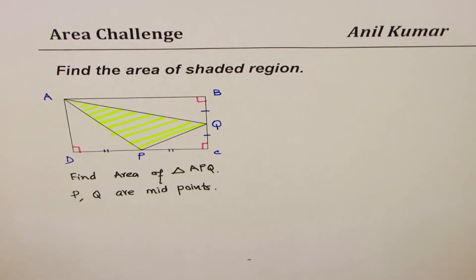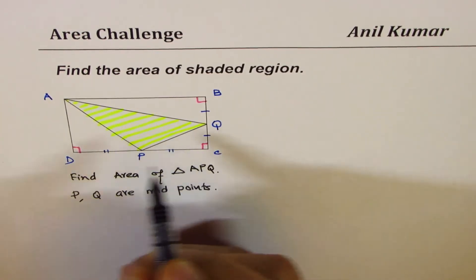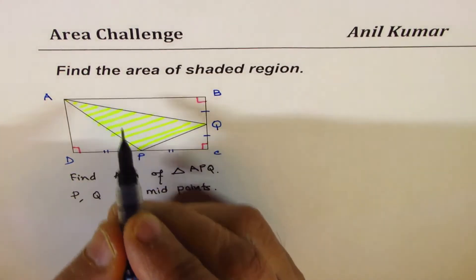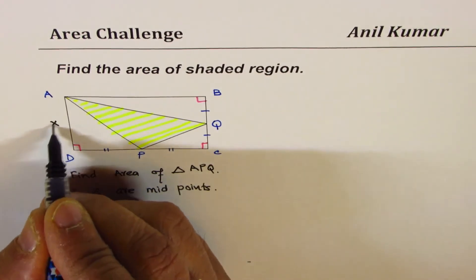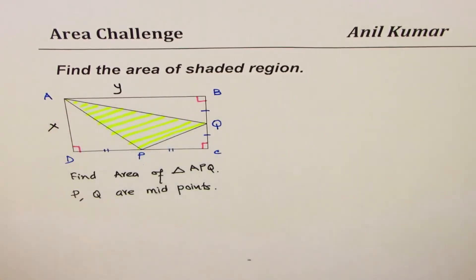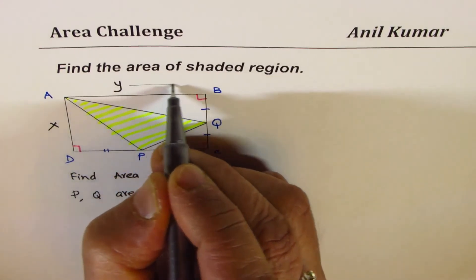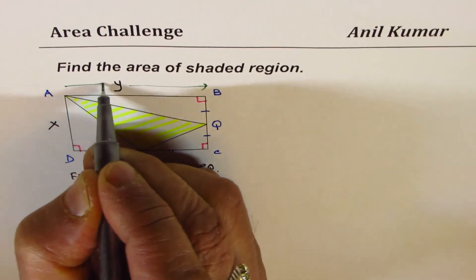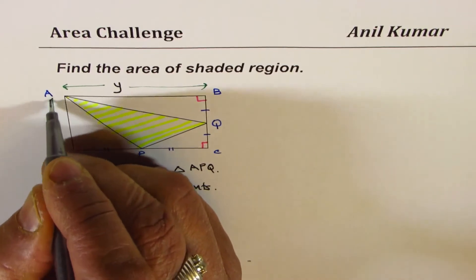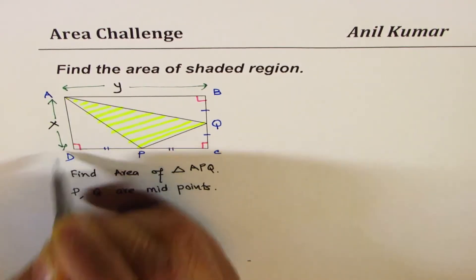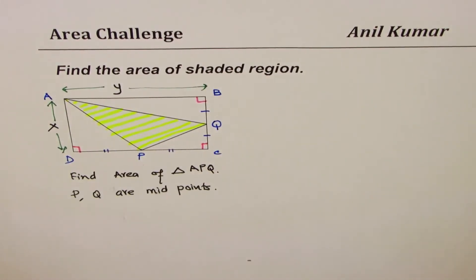You can always pause the video, answer the question, and then look into my suggestions. In general, let's say the side lengths are X and Y, so we'll put this length as X and this is Y. So we're just taking our dimensions X and Y for our rectangle so that we can work with some variable values and get to the result. I hope now the question is absolutely clear.